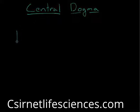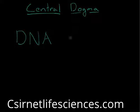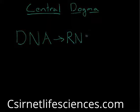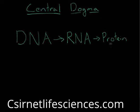So the central dogma says that DNA — deoxyribonucleic acid — makes RNA. Really, it forms a template for RNA, which then forms a template for protein. And this actually may look familiar to you already. DNA makes RNA makes protein. So let's go into detail now.